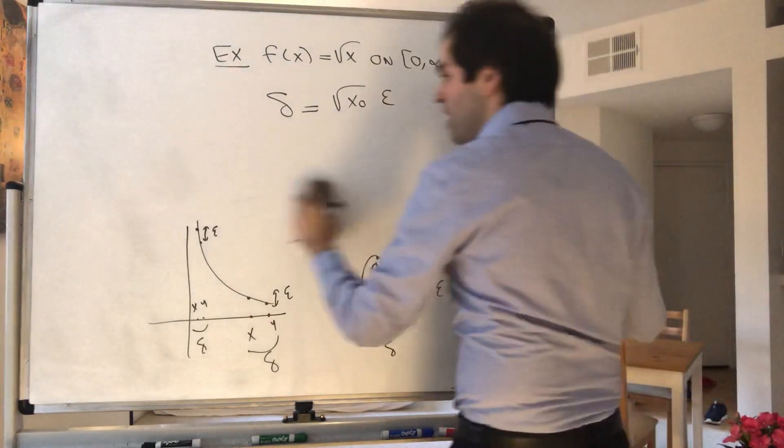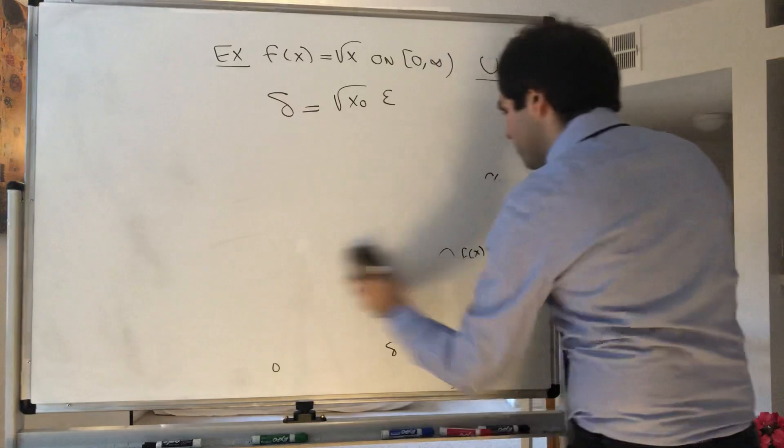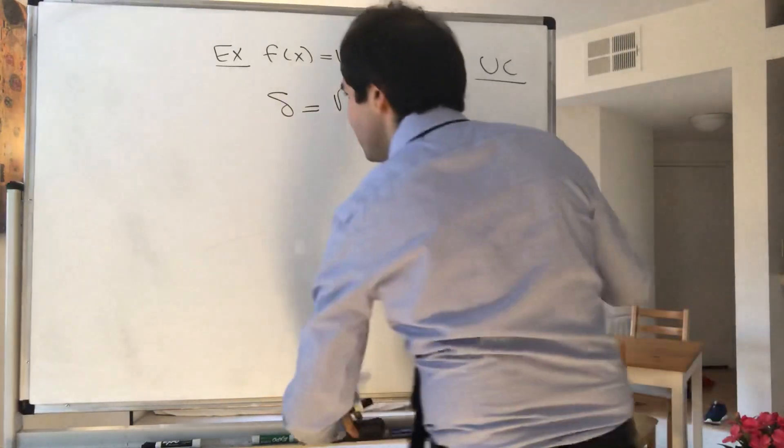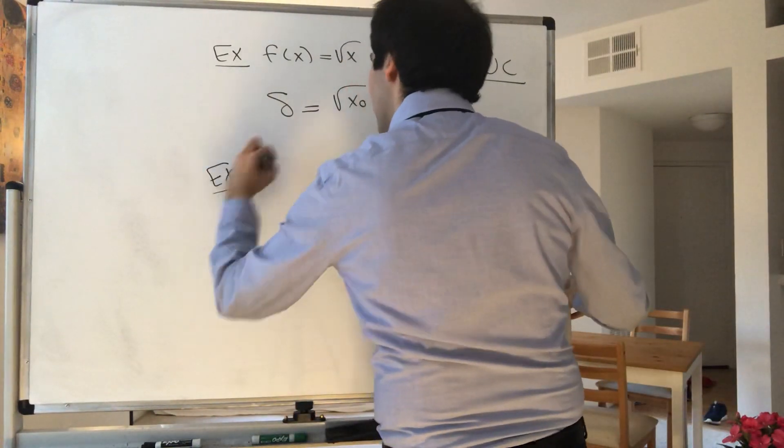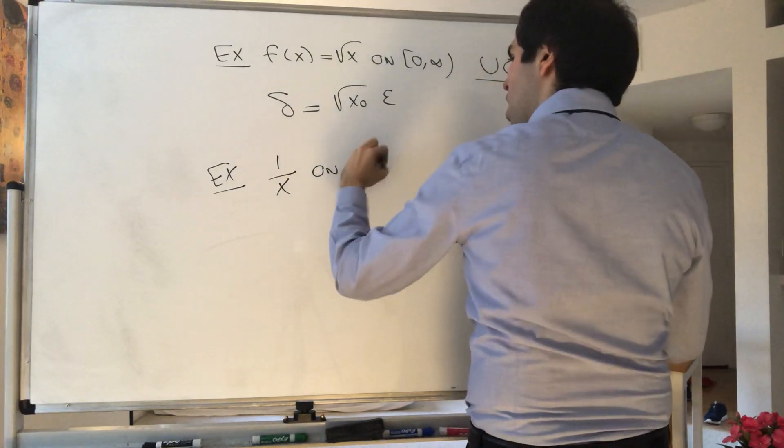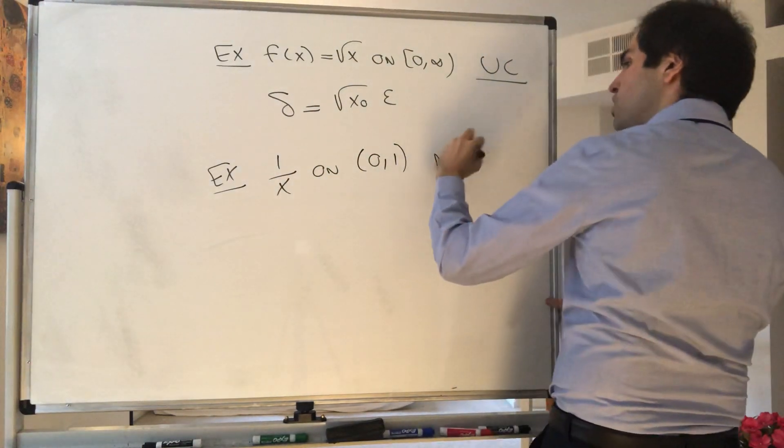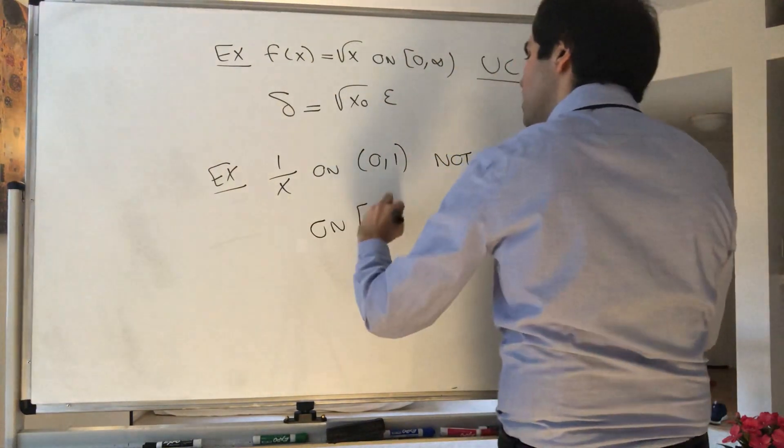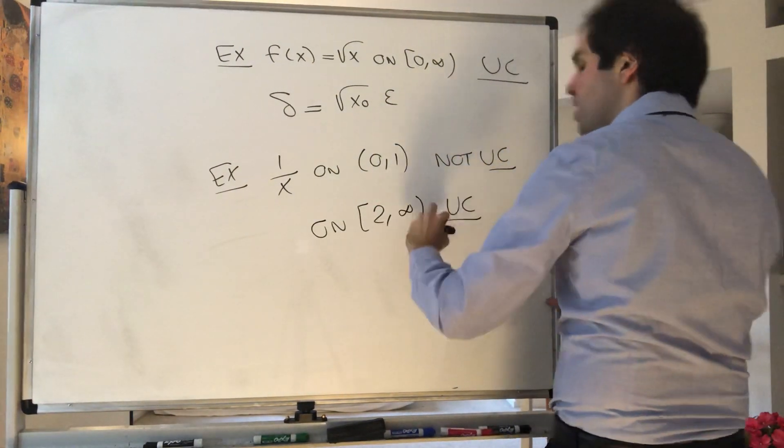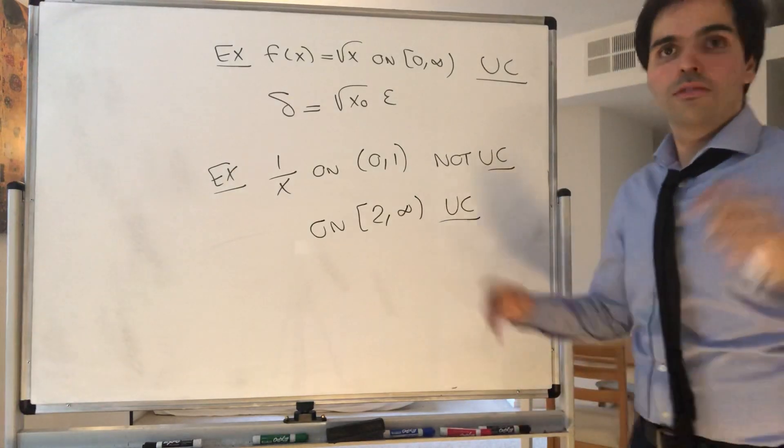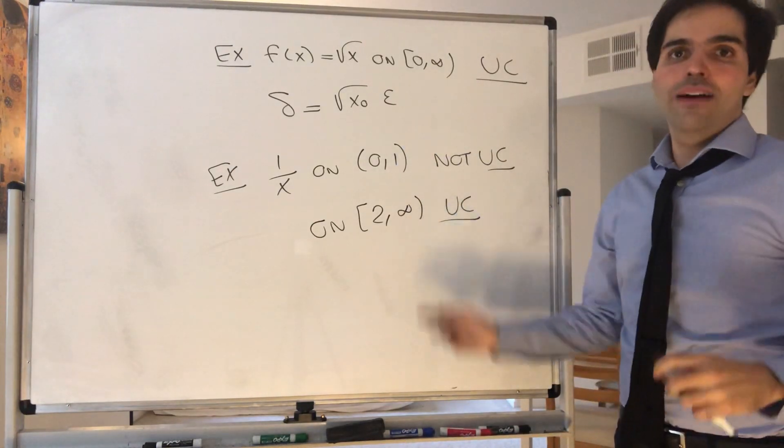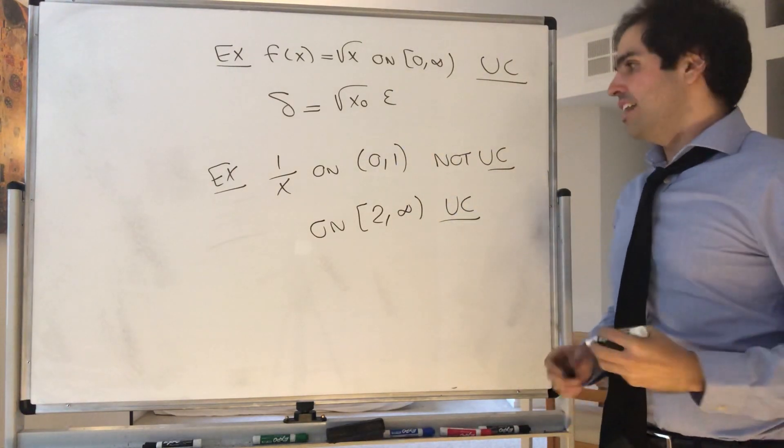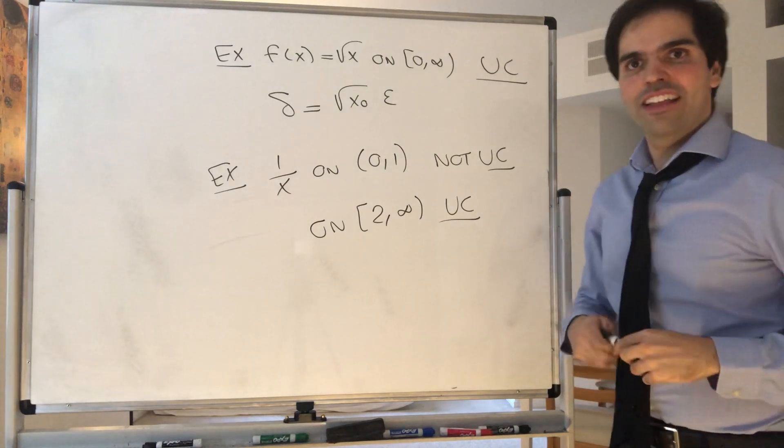And lastly, the interval plays a big role. So for instance, if you take 1 over x on 0 comma 1, we'll show it's not uniformly continuous. But if you take it on the interval 2 comma infinity, it is uniformly continuous. So the interval actually matters, and we'll show this in the next couple of videos. All right, thank you very much.